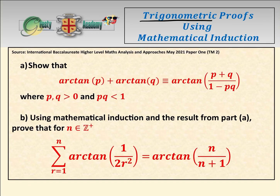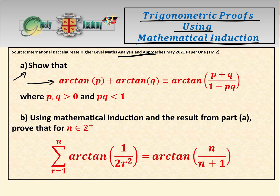Today we're looking at trigonometric proofs using mathematical induction, and this question is from the IB Higher Level Maths AA May 2021 Paper 1. So part A is to show this identity here, and then part B is to use the result from part A to prove this by mathematical induction.